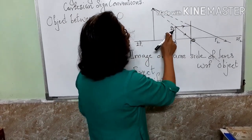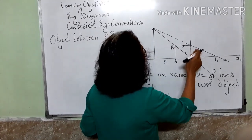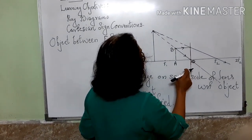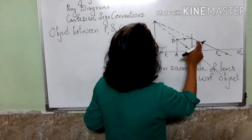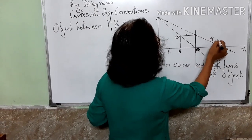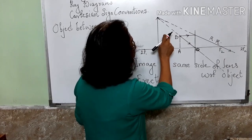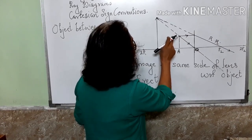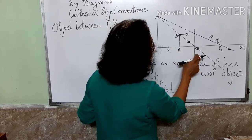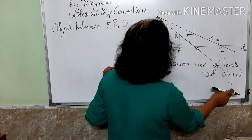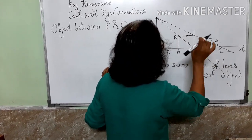I take a ray starting from the object, parallel to the principal axis. By rule, it will refract through F1 — so this is the refracted ray. The second ray begins from the object directed towards the optic center, and without any deviation moves ahead. So this is the next ray diagram.